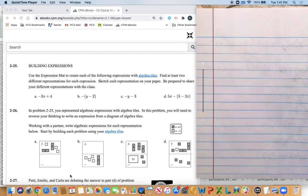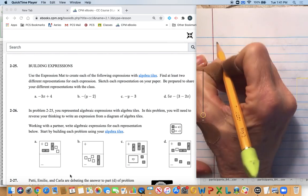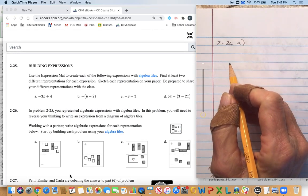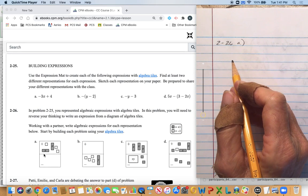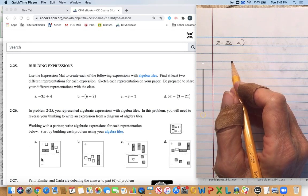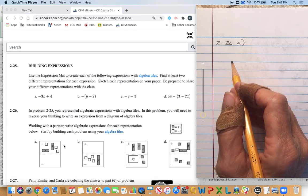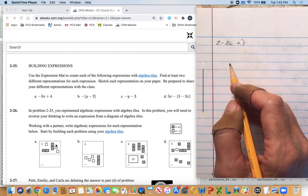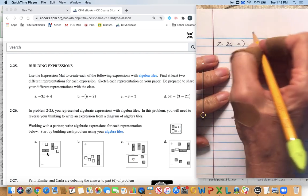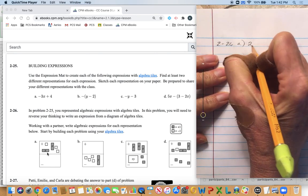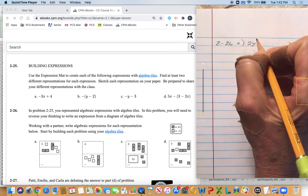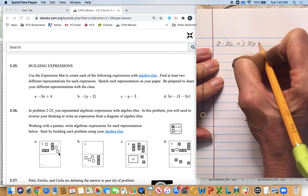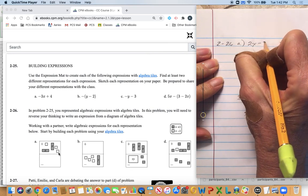Okay, so the first one is 2-26a. And if we look at the mat down here we see that everything is in the plus area and so we won't have any parentheses. And so I'm counting up, I see two positive X's, so that's 2x.